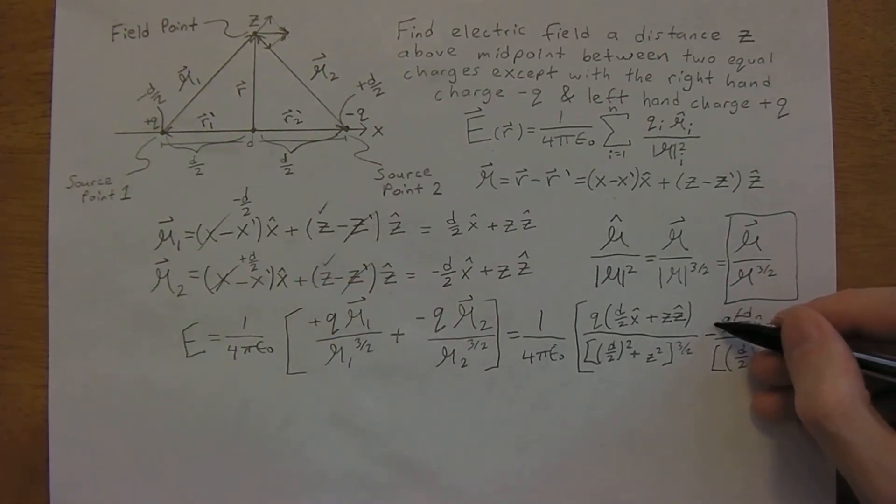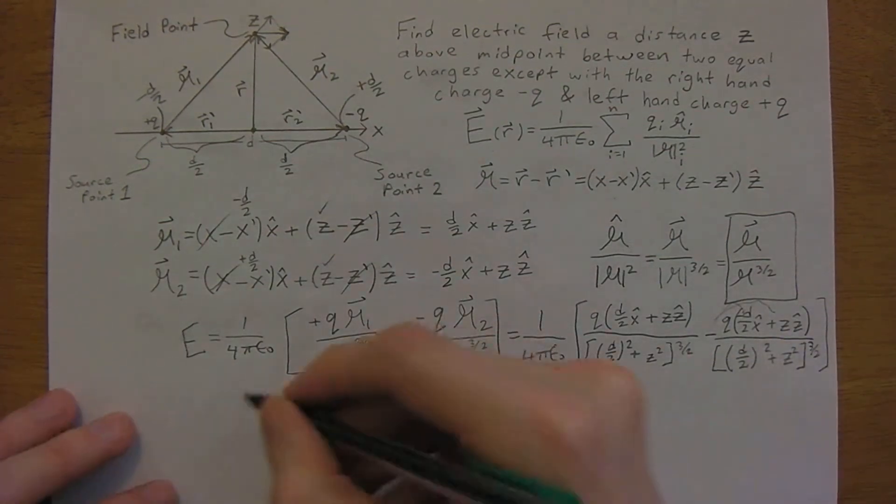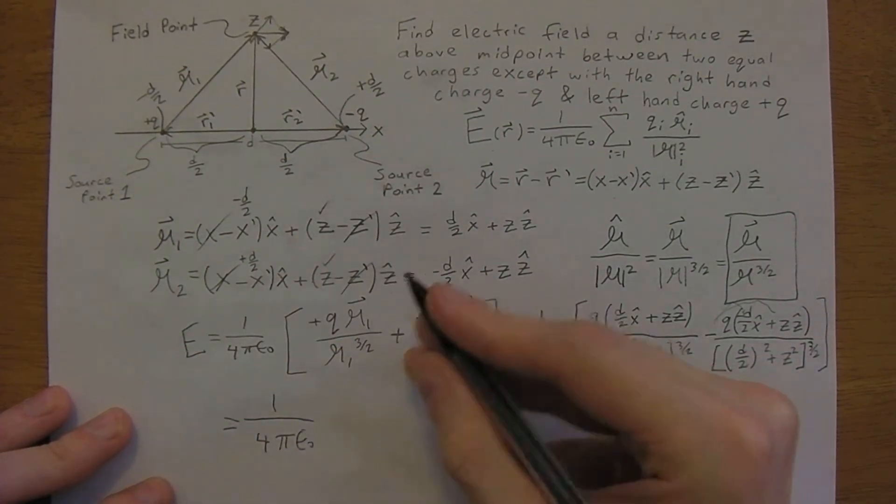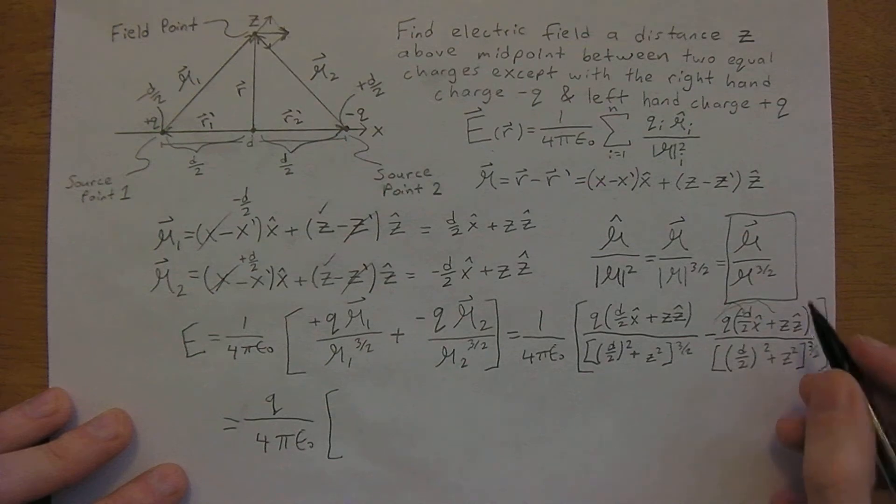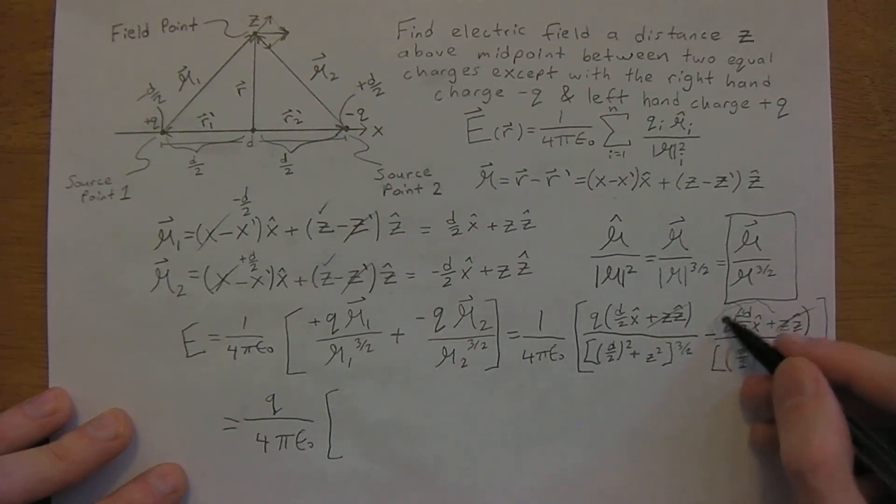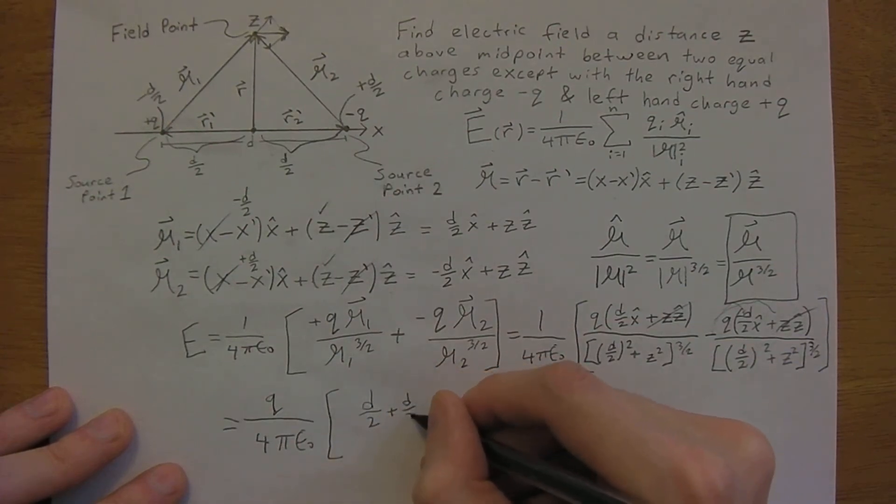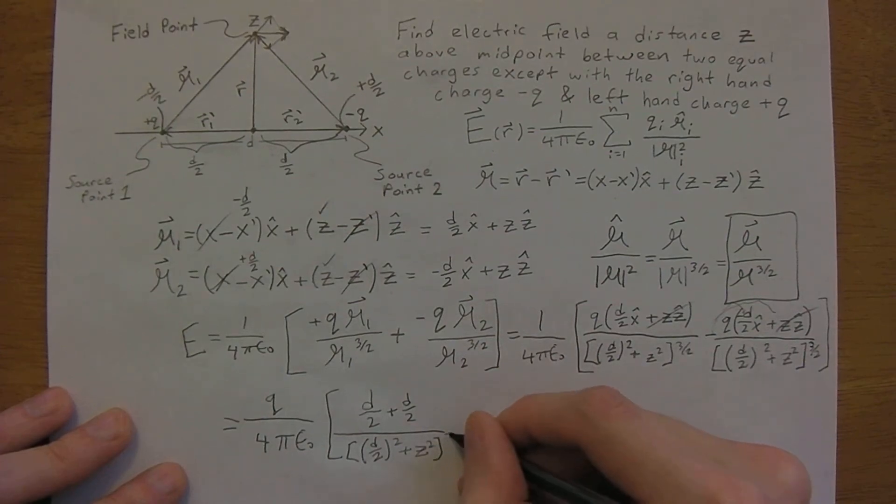So this negative will distribute in, make this positive and make this negative. So what we're going to end up with is very similar to the previous video. We can pull this q out front, and we're going to get these two terms now cancel, because this will distribute in, make this negative, this will be positive, these two will add. So we'll just have d over 2 plus d over 2 divided by the same common denominator z squared to the 3 halves.